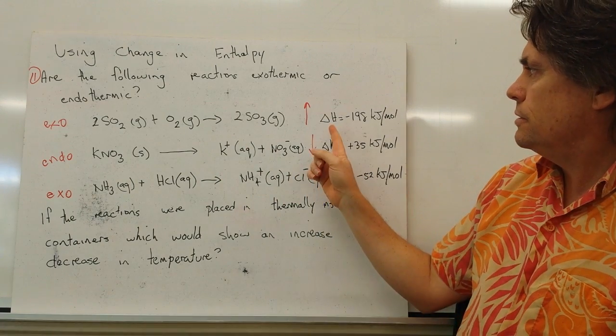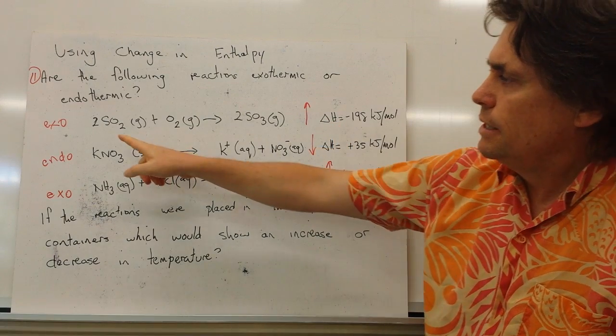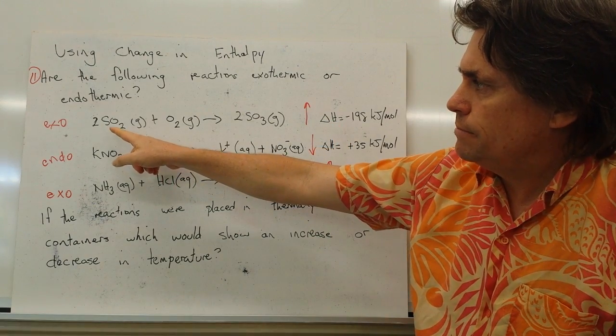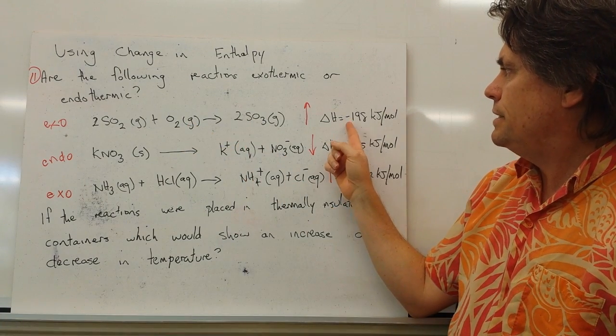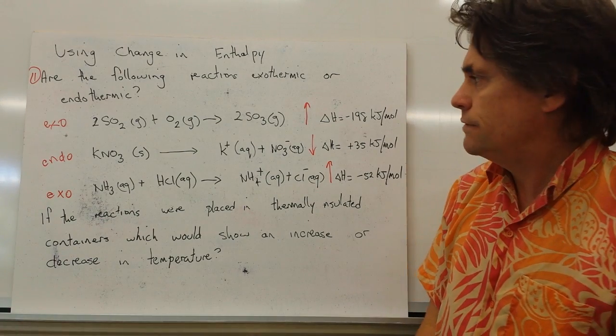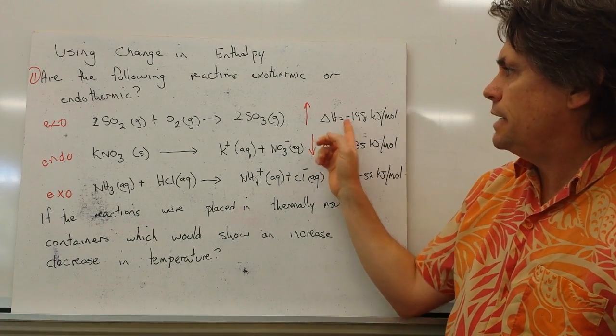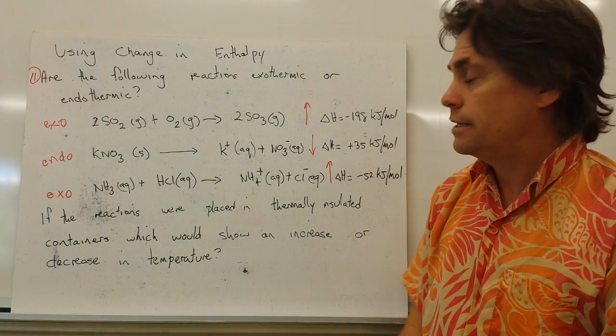We have a delta H value for the combination of sulfur dioxide plus oxygen to give us sulfur trioxide. We have a negative 198 kilojoules per mole for our delta H value. If it's a negative value, we have an exothermic reaction. It's giving heat out to the environment.